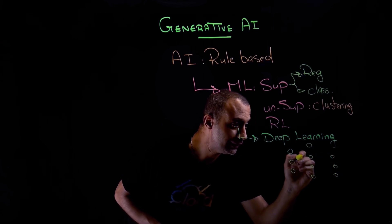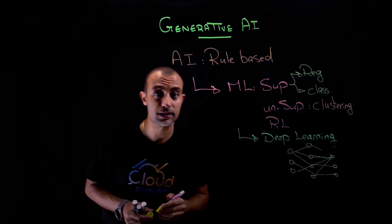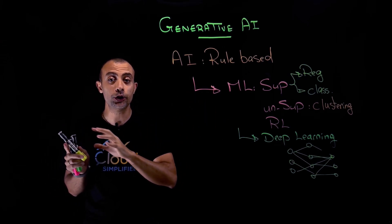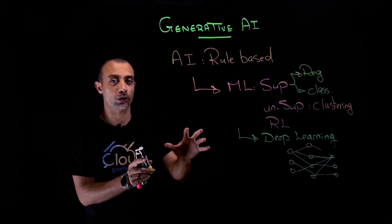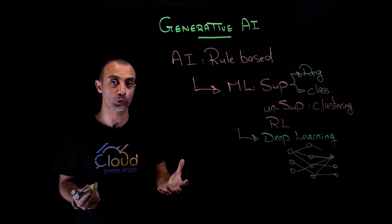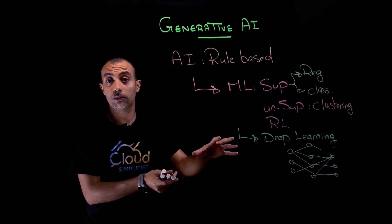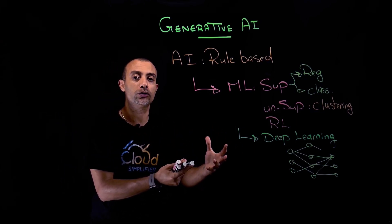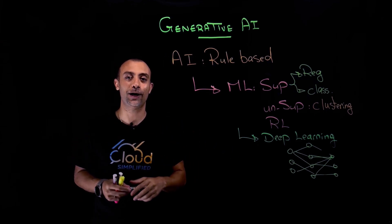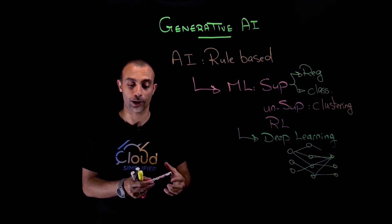These neural networks simulate how the neurons in our minds talk to each other. In deep learning, I feed my model a huge amount of raw data, and my model tries to understand what it has — for example, something like object detection or facial recognition. I feed my model lots of data and leave it to understand, detect objects, or perform facial recognition. Gen AI is a subset of deep learning.